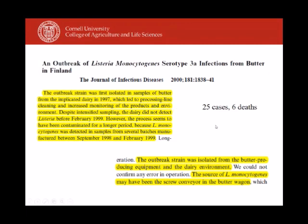This contamination is not just a theoretical concern. There was an outbreak in Finland — 25 cases, six deaths — where the most likely source was a screw conveyor in a butter wagon, a difficult-to-clean piece of equipment. Butter is an unusual food that people wouldn't necessarily associate with Listeria growth, but if the water droplets in butter are large enough, there is the possibility for some growth. These sorts of persistent Listeria contamination and survival in a plant lead to outbreaks, and virtually all outbreaks have been linked to persistence of Listeria in a facility.